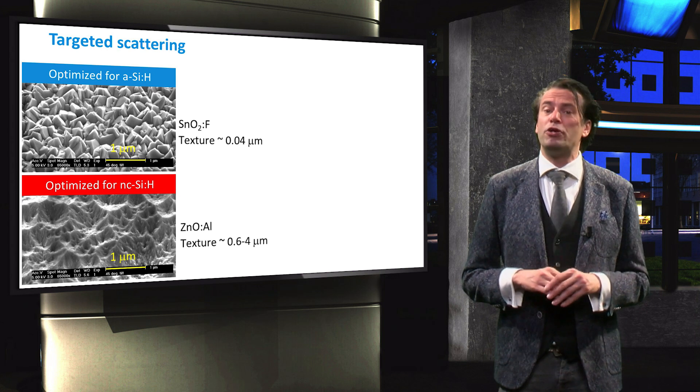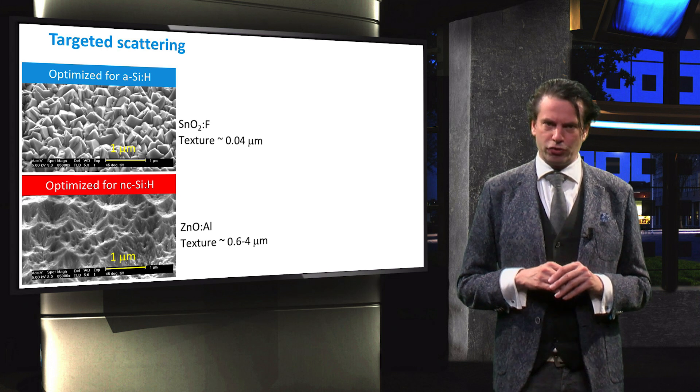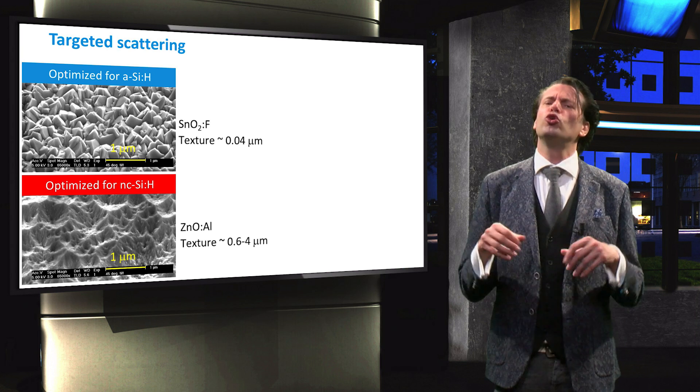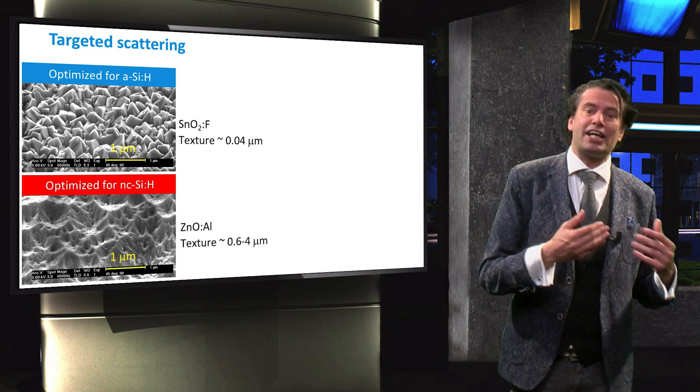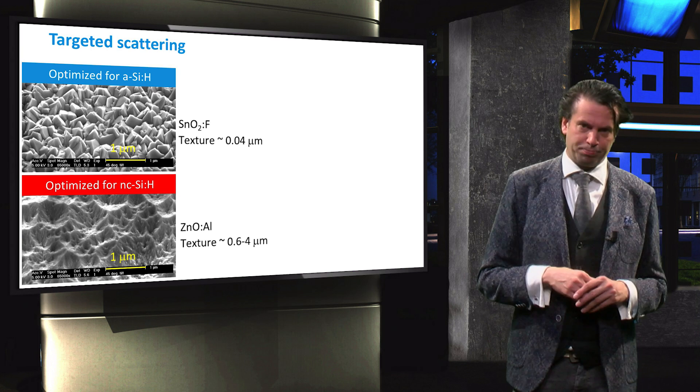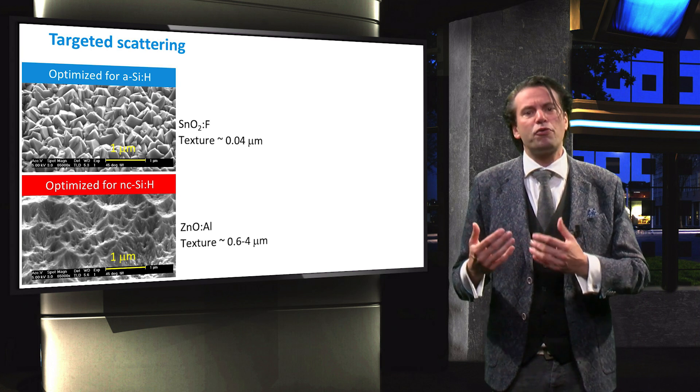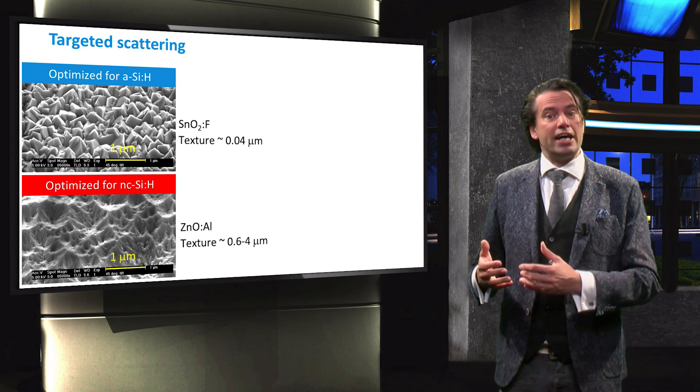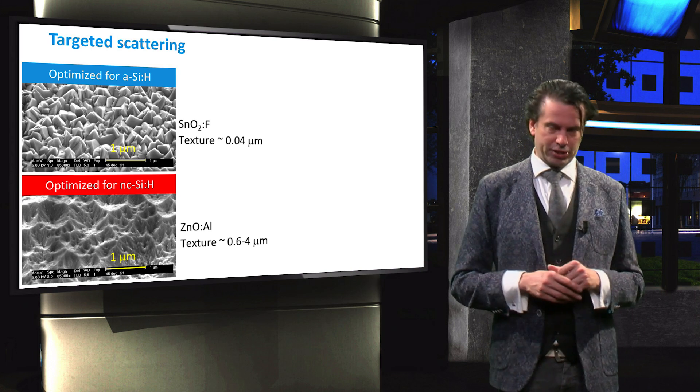As explained in the PV1-X photovoltaic energy conversion course, small surface features only effectively scatter the visible part of the spectrum. Larger features are required to efficiently scatter light in the red to infrared spectral part.